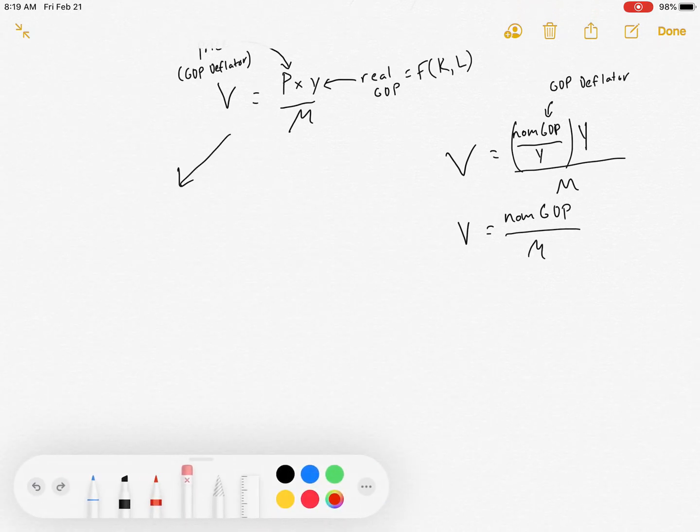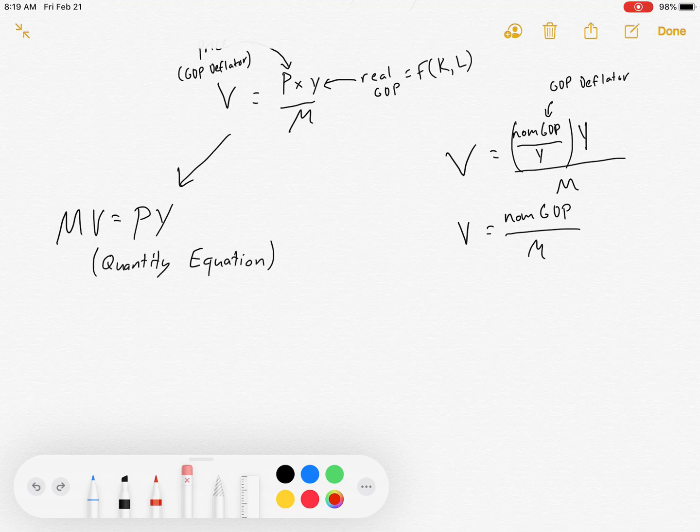So let's move that and rearrange it just a little bit. We'll multiply both sides by M and we'll get MV equals PY. And that is called the quantity equation. The amount of money times its velocity equals the total amount of spending that happens.